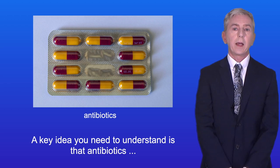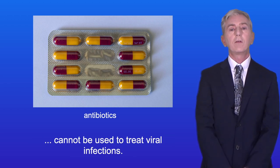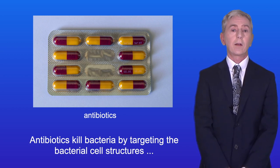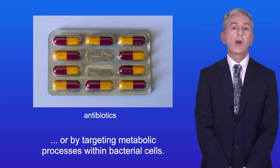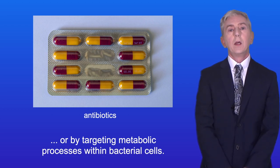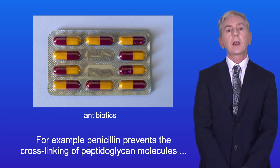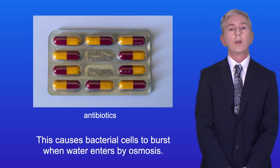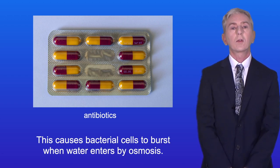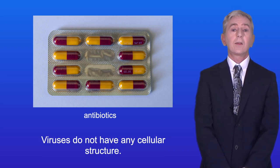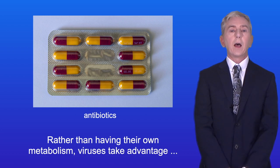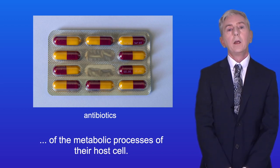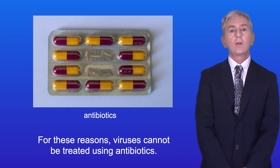A key idea to understand is that antibiotics cannot be used to treat viral infections. Antibiotics kill bacteria by targeting bacterial cell structures or metabolic processes within bacterial cells. For example, penicillin prevents the cross-linking of peptidoglycan molecules in the bacterial cell wall, causing bacterial cells to burst when water enters by osmosis. Viruses, however, do not have any cellular structure, and rather than having their own metabolism, they take advantage of the metabolic processes of their host cell. For these reasons, viruses cannot be treated using antibiotics.